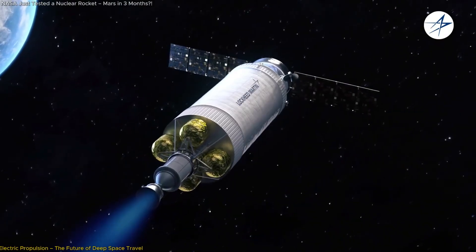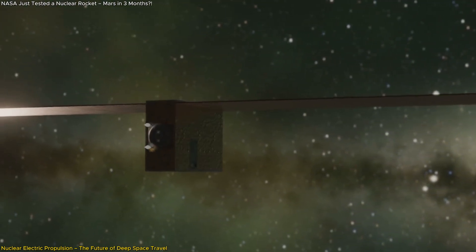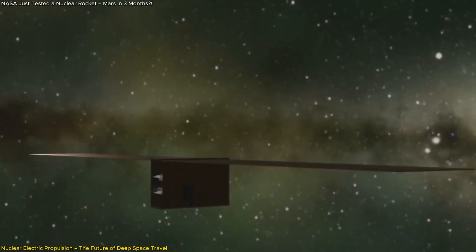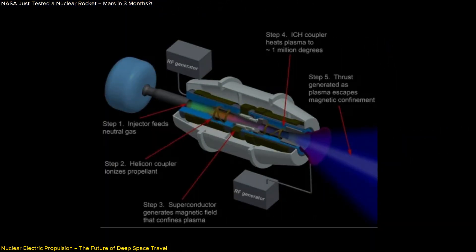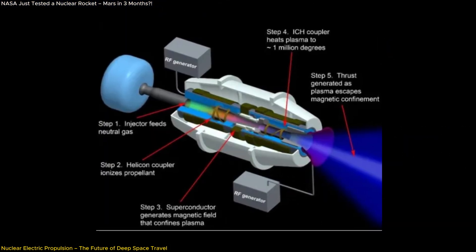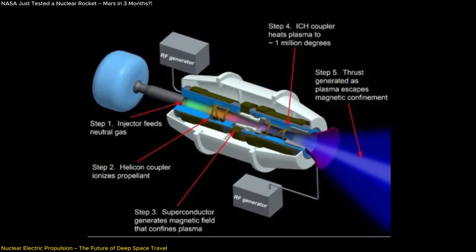While NTP provides high thrust for rapid travel, nuclear electric propulsion takes a different approach, trading speed for long-term efficiency. Instead of expelling heated propellants like NTP, NEP converts nuclear energy into electricity, which is then used to accelerate ionized gas particles to generate thrust.